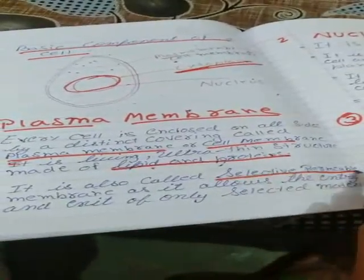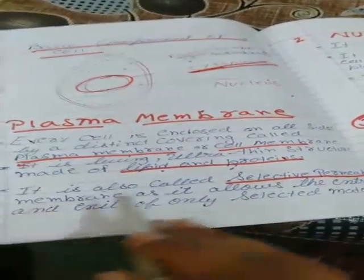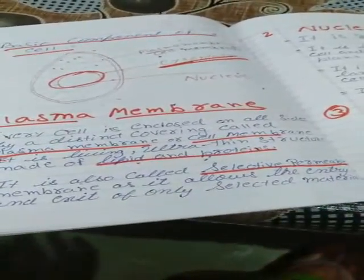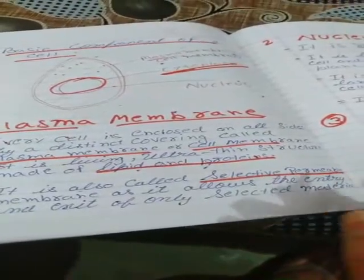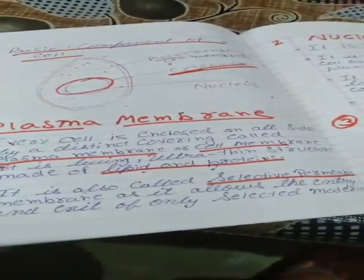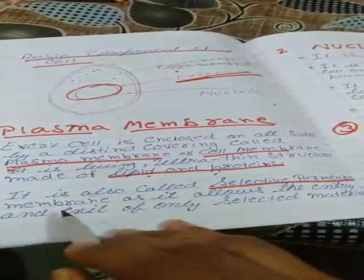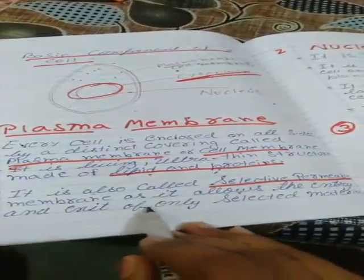It is called the selective permeable membrane because it allows the entry and exit of only selected materials. This point is the answer to the question: why is the plasma membrane or cell membrane called a selective permeable membrane? It is because it allows the entry and exit of only selected materials.